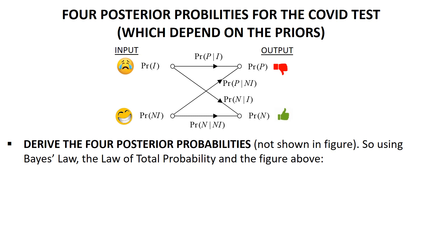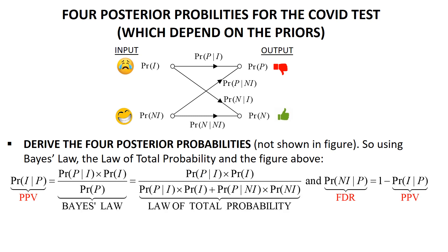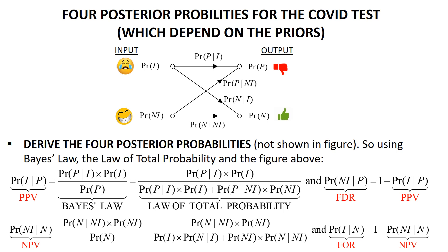To derive the four posterior probabilities, use Bayes' law and the law of total probability. For PPV: write Bayes' law, expand the denominator using total probability. The probability of not being infected given a positive test is simply one minus PPV. Do exactly the same for NPV. All four posterior probabilities are written in terms of the binary model parameters plus the priors.